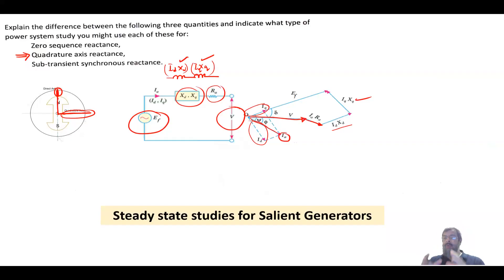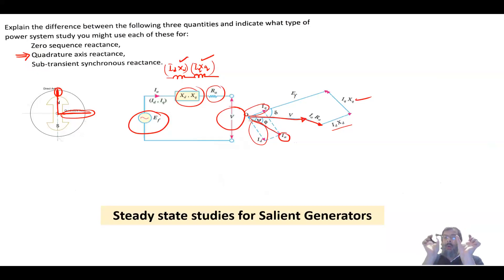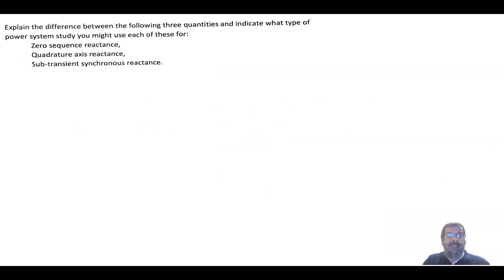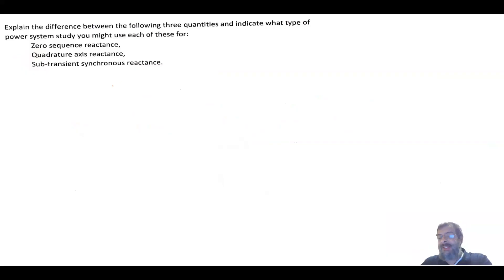So the quadrature axis reactance is used whenever you are modeling a salient pole generator. It represents one of the two reactances — xd and xq — that replace the single synchronous reactance used for round rotor machines.